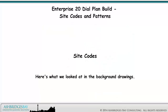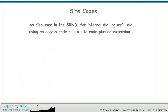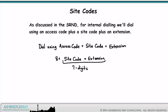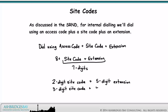Let's talk about site codes. As discussed in the SRND, for internal dialing we'll dial using an access code plus a site code plus an extension. We use 8 as the access code for inter-site dialing. We'll make the site code plus the extension always be seven digits — a familiar format for everyone. At large sites, we used a two-digit site code plus a five-digit extension. At small sites, we used a three-digit site code plus a four-digit extension.